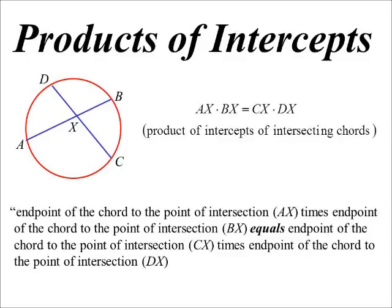Now, it sounds a lot more complicated, but when you look at the picture it actually makes it quite clear. The endpoint of the chord to the point of intersection — AX — times the endpoint of the chord to the point of intersection — BX — is equal to the endpoint of the chord to the point of intersection — CX — times the endpoint of the chord to the point of intersection — DX.